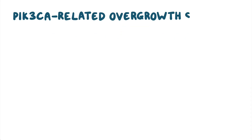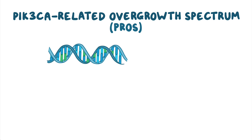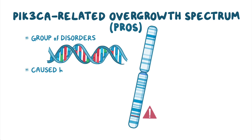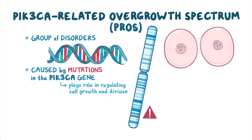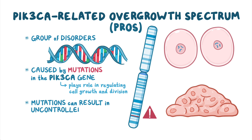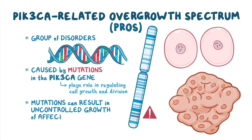PIK3CA-related overgrowth spectrum, or PROS, is a group of disorders caused by mutations in the PIK3CA gene, which plays a role in regulating cell growth and division. As a result, mutations can result in uncontrolled growth of affected tissues.